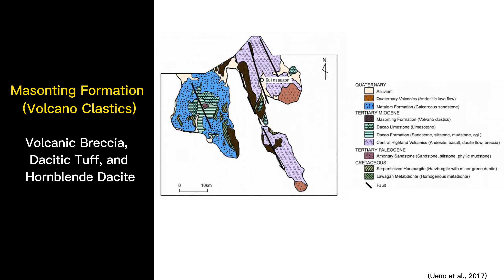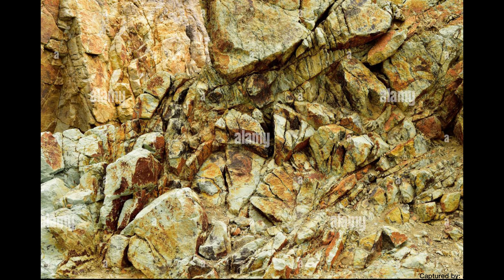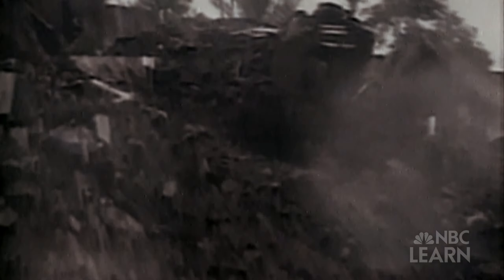The lithology of Ginzaugun is composed of volcanic breccia, dacitic tuff, and hornblende dacite. With hydrothermal alteration, these rocks turned into smectite, and due to the characteristic of smectite in combination with the heavy rainfall, it expanded and caused the instability of the natural slope, leading to the disaster.